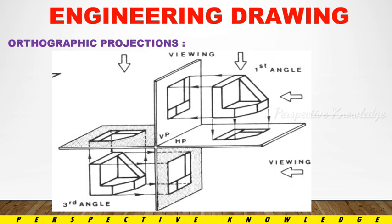In Orthographic Projection, we have four quadrants divided by horizontal (X) and vertical (Y) axes. The quadrants are 1st, 2nd, 3rd, and 4th angle. We use either the 1st angle or 3rd angle projection. First Angle Projection is the Indian Standard, and Third Angle Projection is the International Standard. In most engineering drawings, we use the Third Angle Projection.